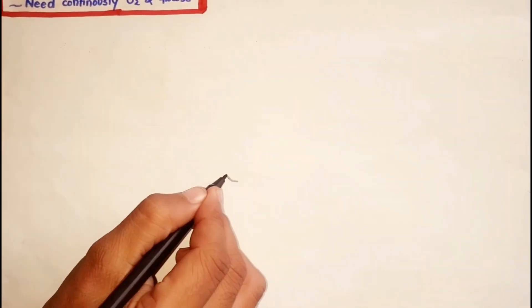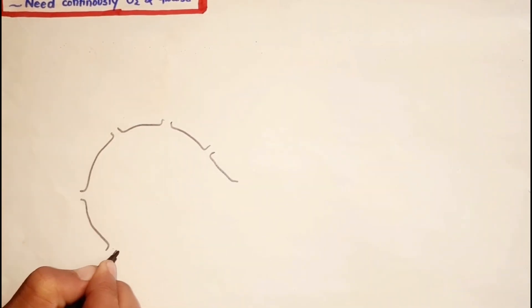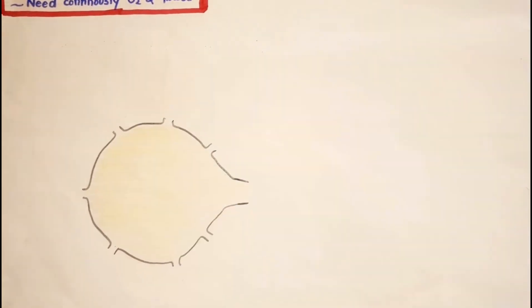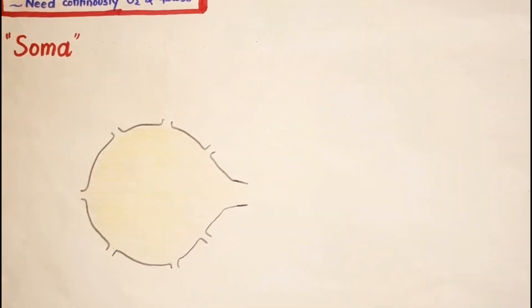First of all, let's talk about the neuron cell body. The neuron cell body is otherwise known as soma and acts as a biosynthetic center of the neuron.